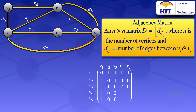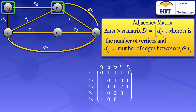For v4: between v4 and v4 there is no loop, so we put zero. Between v4 and v5, there is one edge, e4, so we put a one at v4,v5 and also at v5,v4.